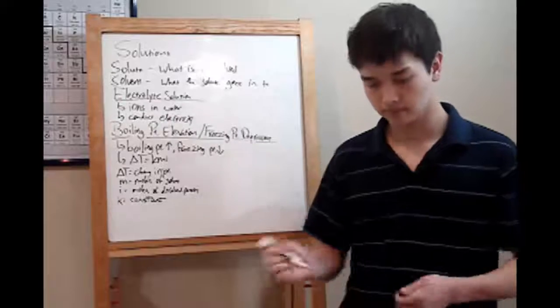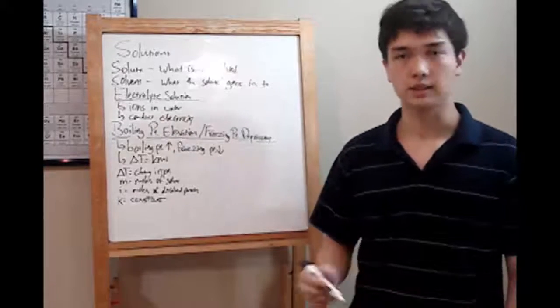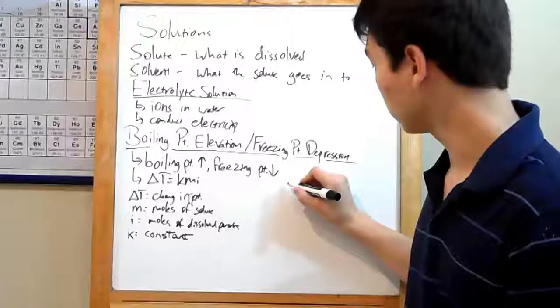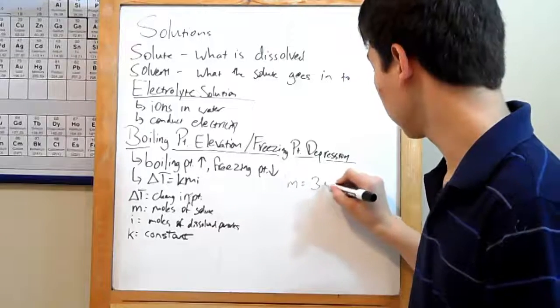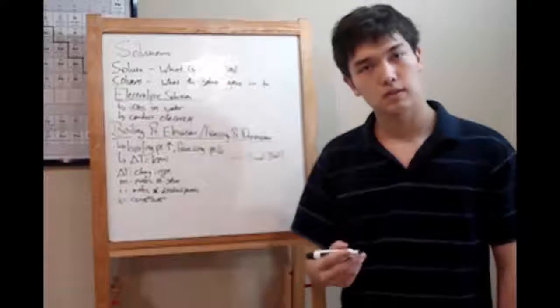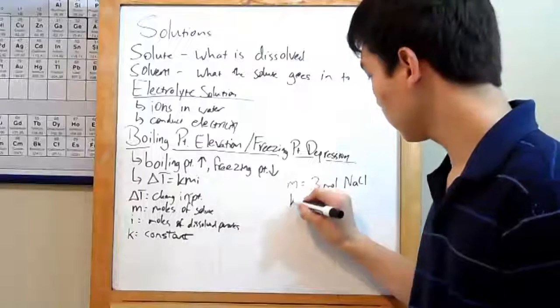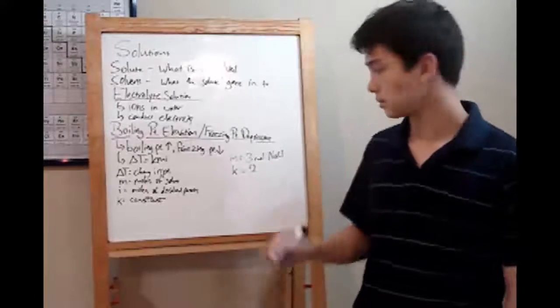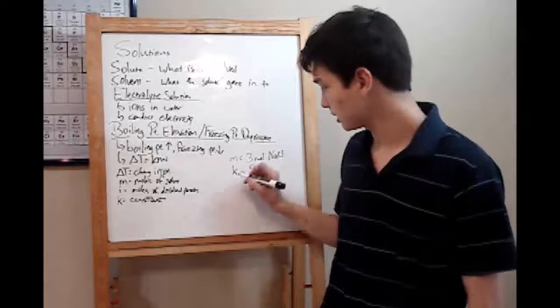Let me give you an example. Let's say that you're dissolving salt in water, like up there. You're given 3 moles of NaCl and you want to put that into water. You're given a K. For this equation, let's just say your K is 2. That's probably not the right one for water, but this is just a demonstration.